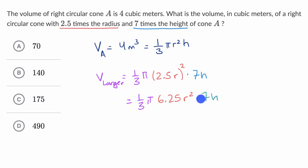And now what I'm going to do is I'm going to take out all of the parts of this expression that essentially make up the volume of A and then see what we're scaling it by. So if we take 1/3 pi R squared H, this is equal to 1/3 pi R squared H times, what do we have left over? We have 6.25 times seven.